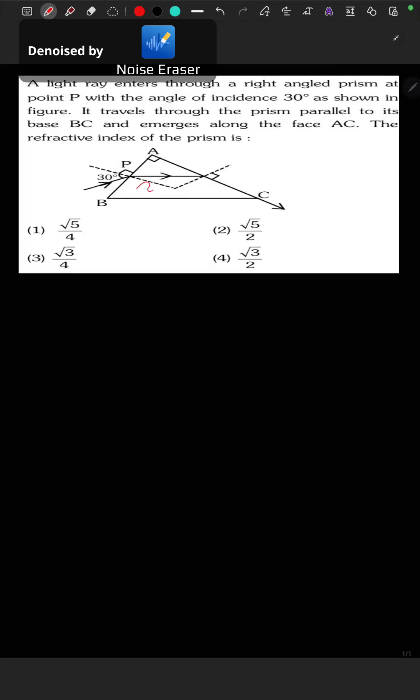To find the refractive index of the prism, let us take the refractive index as mu. According to Snell's law, 1 × sin 30° equals mu × sin r1.